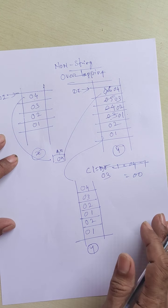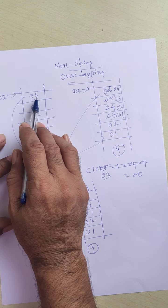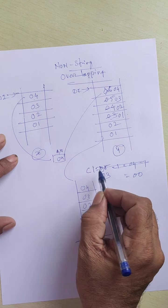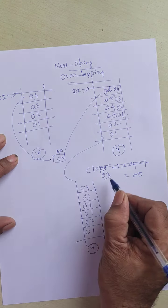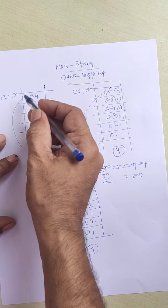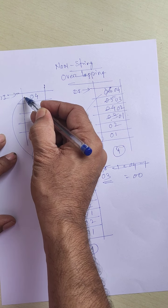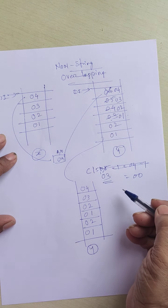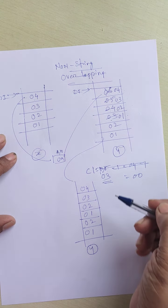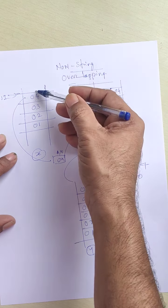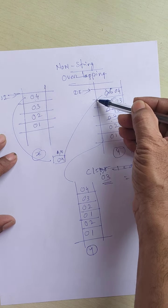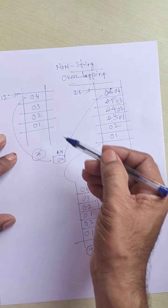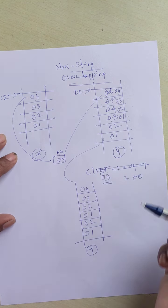We have done this operation manually — copying source to destination by overwriting data already existing in the destination. We pointed source index to source, destination index to destination, and loaded the counter with 3. We copied data pointed by source index into the accumulator and from the accumulator into the destination index. We decremented CL, checked whether it is 0, decremented SI and DI, and repeated the same task.